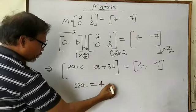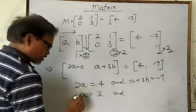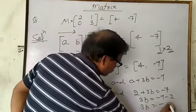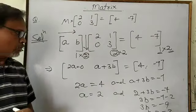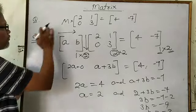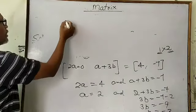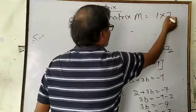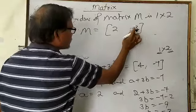Now compare: 2A equals 4, so A equals 2. And A plus 3B equals minus 7. Substituting A equals 2: 2 plus 3B equals minus 7, so 3B equals minus 9, giving B equals minus 3. Don't stop here just writing A equals 2 and B equals minus 3 — that would be wrong, because the question asks for the order and the matrix. So the complete answer is: order of matrix M is 1 cross 2, and M equals [2, minus 3].